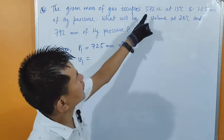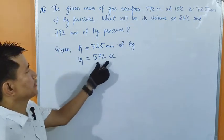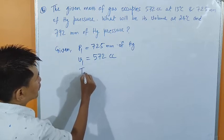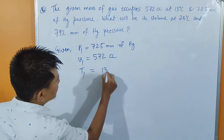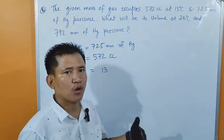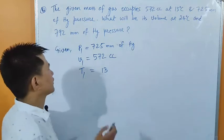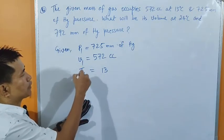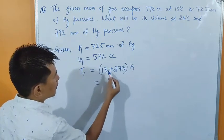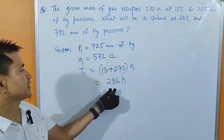V1 is 572 cc — the volume of gas is 572 cc, pressure of gas is 725 mm of Hg, and T1: let us state it in absolute scale. T1 is 13 degrees Celsius, so while using the combined equation of Boyle's Law and Charles' Law, we need to convert this to absolute scale. So T1 equals 13 degrees Celsius plus 273, which gives 286 Kelvin. So 13 degrees Celsius means 286 Kelvin.